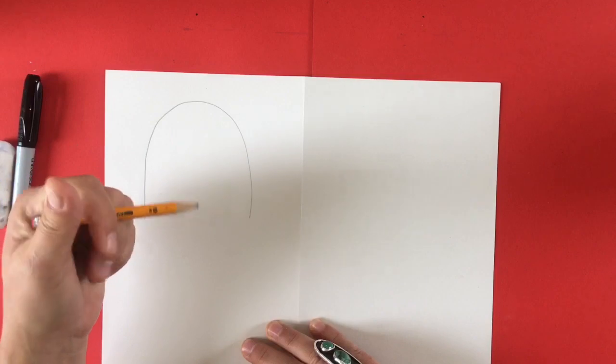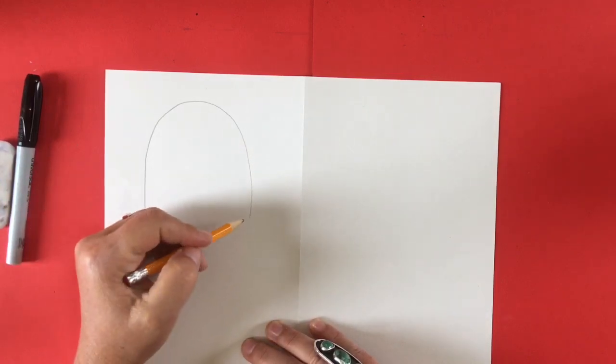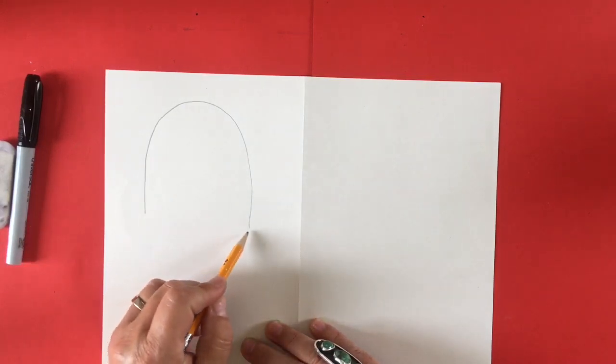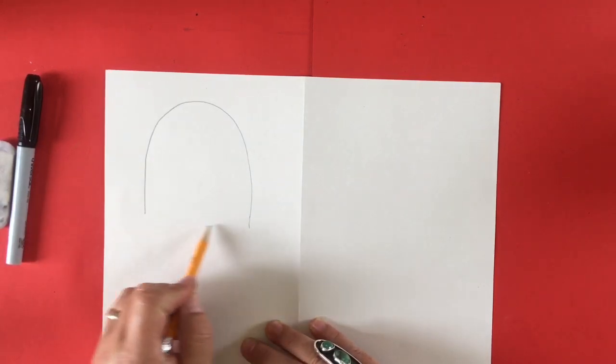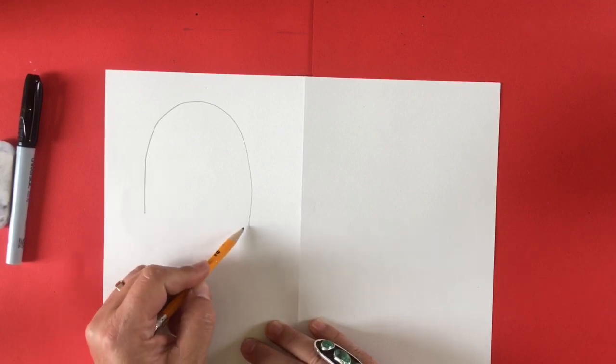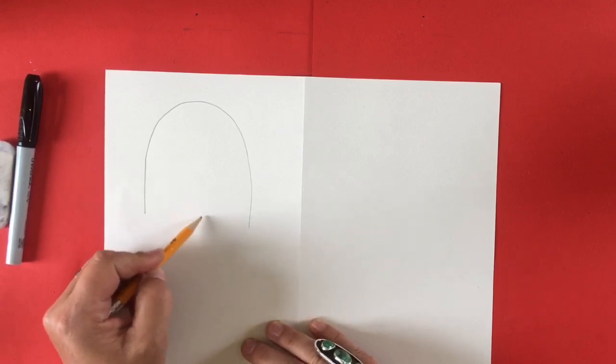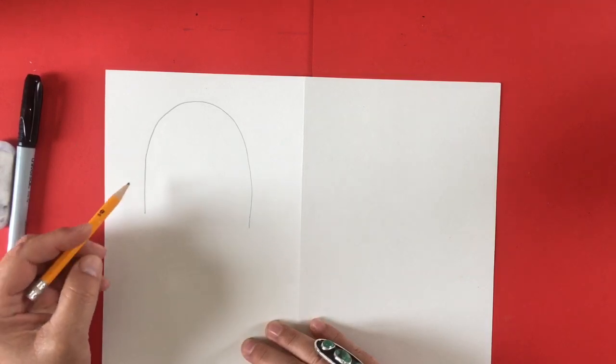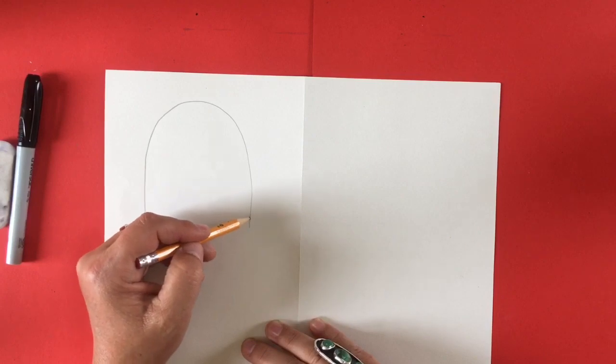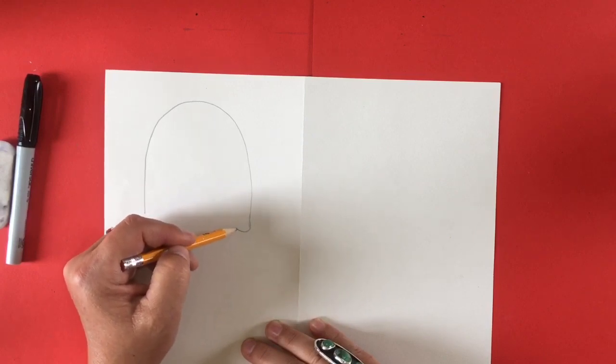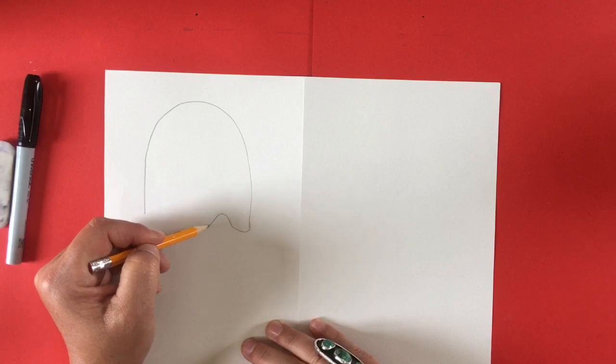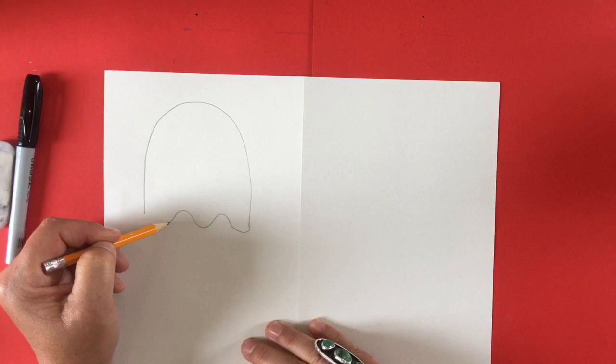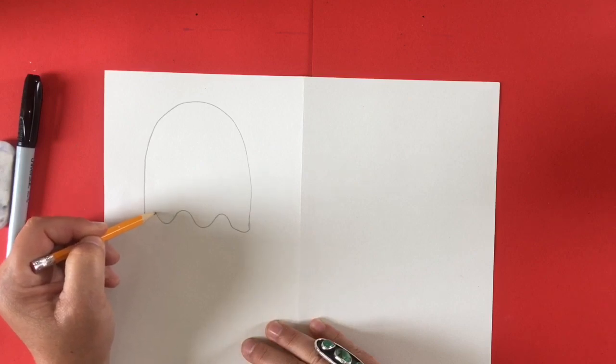The next line we're going to do is going to be a wavy line, kind of like the ocean waves that go up and down. It's going to go from side to side matching up those two lines. Here I am practicing just so I know how I'm going to make that line. I'm going to take my pencil and put it on the edge of my hill and go up and down and up and down until I meet that other point.